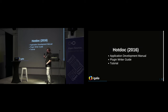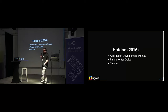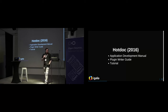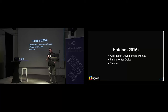We used to have books and a lot of documentation scattered everywhere, and in 2016 we started to rationalize that and put it into a common tool for everything. We moved the application development manual and the plugin writer guide from DocBook to Markdown, using HotDoc for everything, having it all on our website in a simple way, and we moved the tutorials from GStreamer.com to the same documentation portal.